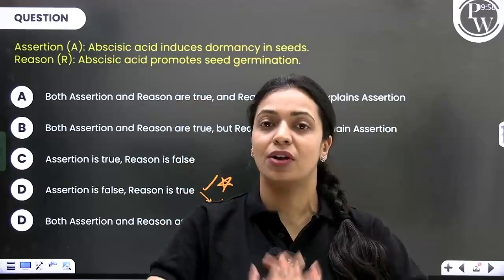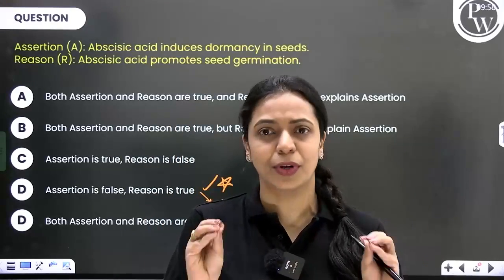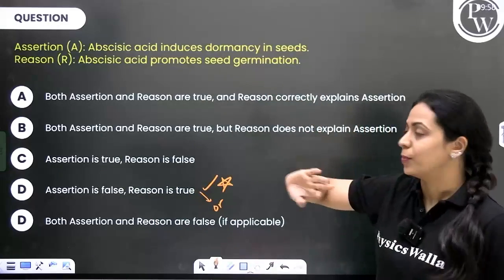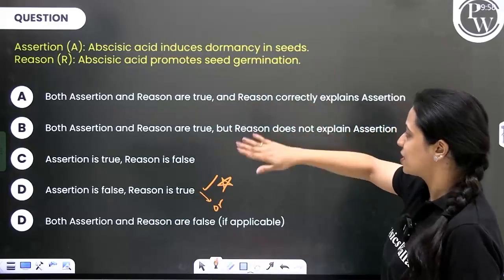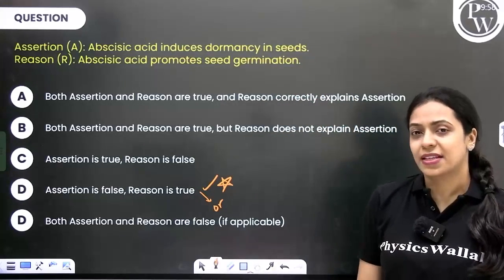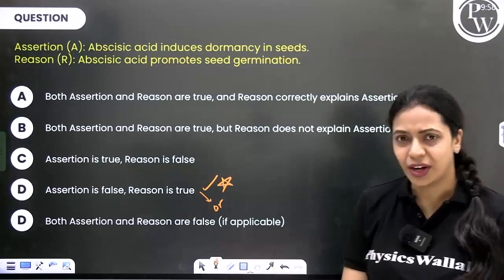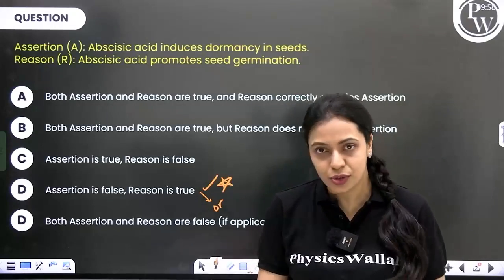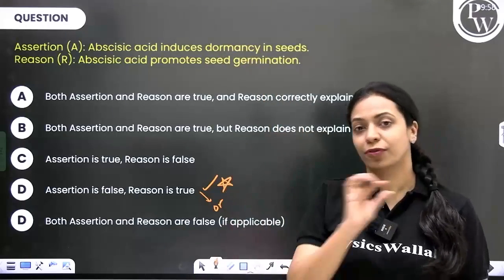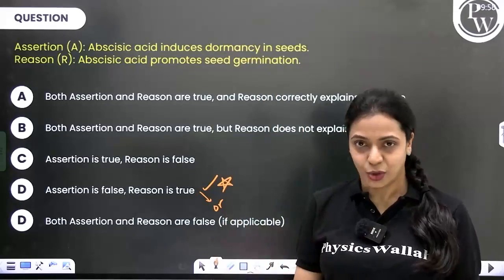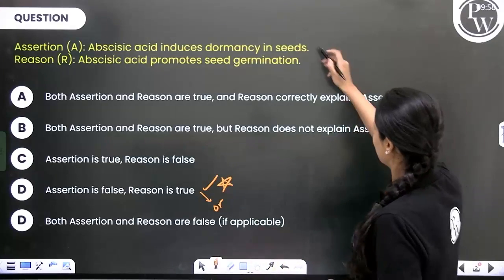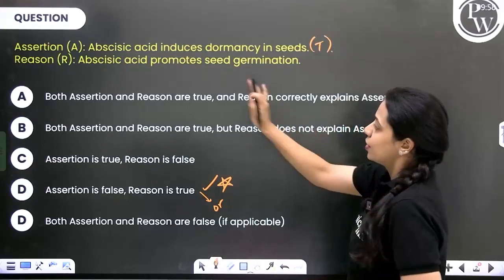You first look at the assertion statement and the reason statement independently, without forcing any link between them. Identify whether each of the two statements is true or false — this is a very simple true or false kind of question. Let us take this example. The assertion statement says: abscisic acid induces dormancy in seeds. Does abscisic acid induce dormancy in seeds? That is what I need to know right now — whether it is true or false. I do not care whether it is related to the reason yet. I know that abscisic acid induces seed dormancy, so this is true.